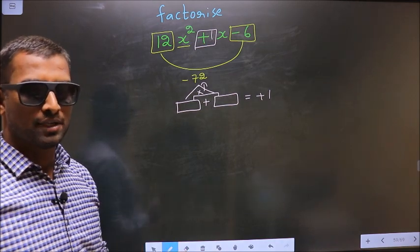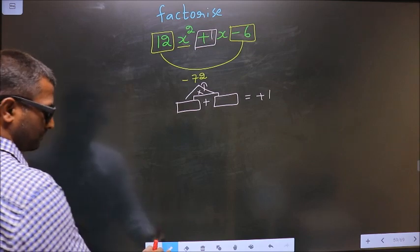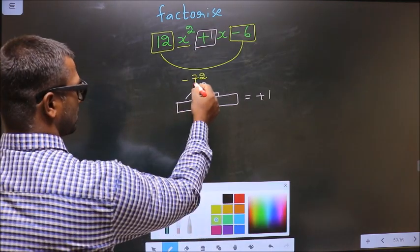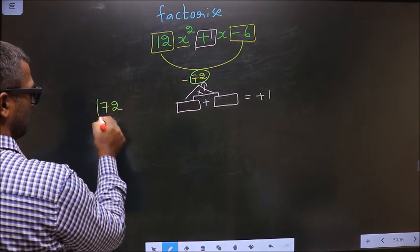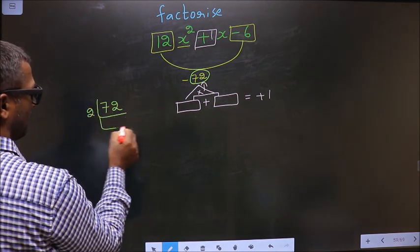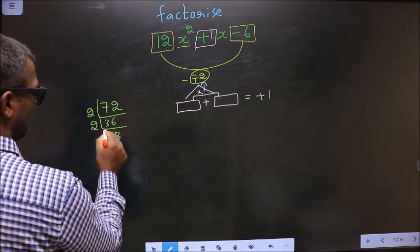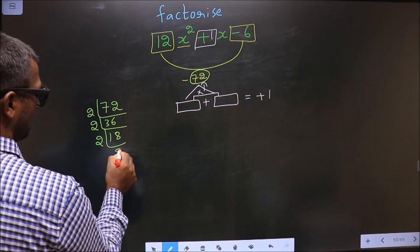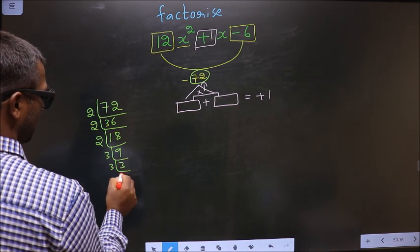To get those two numbers, we should take the prime factorization of 72. So I start with 2: 2, 36; 2, 18; 2, 9; then 3, 3, 1.